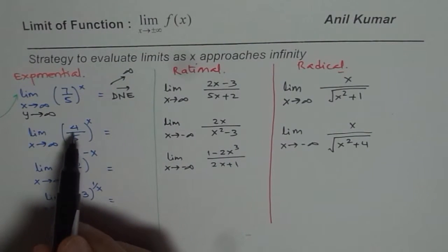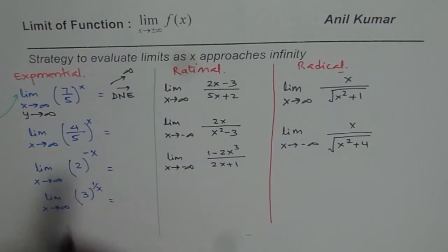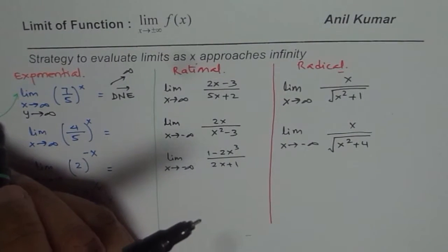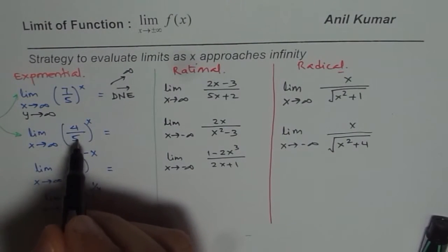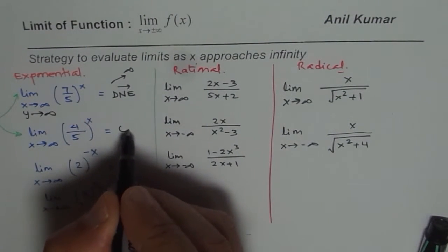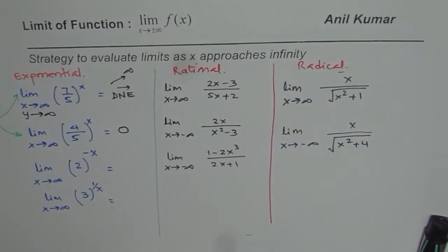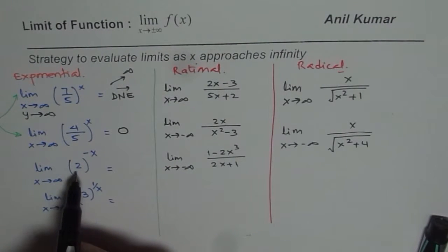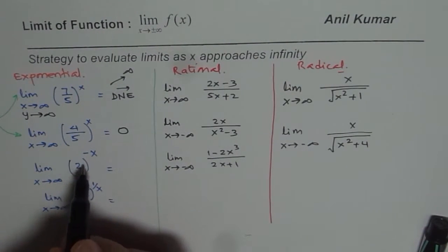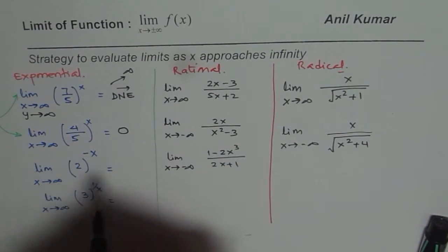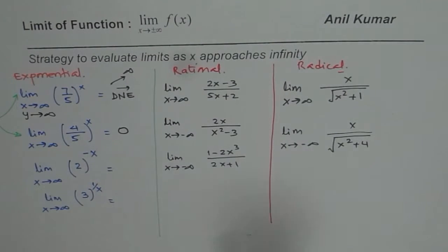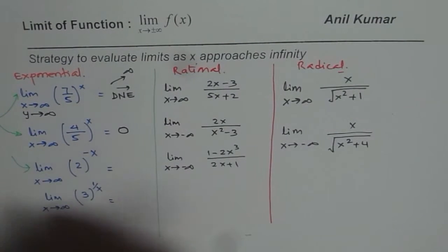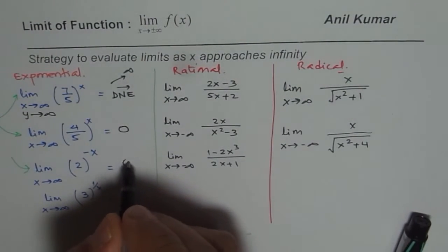In the case of 4 over 5 to the power of x, the denominator base is higher, so the function will actually decay. In this case, the limit approaches 0. For 2 to the power of minus x, it is the same as writing one-half to the power of x, so this is also a decaying function and it approaches 0.